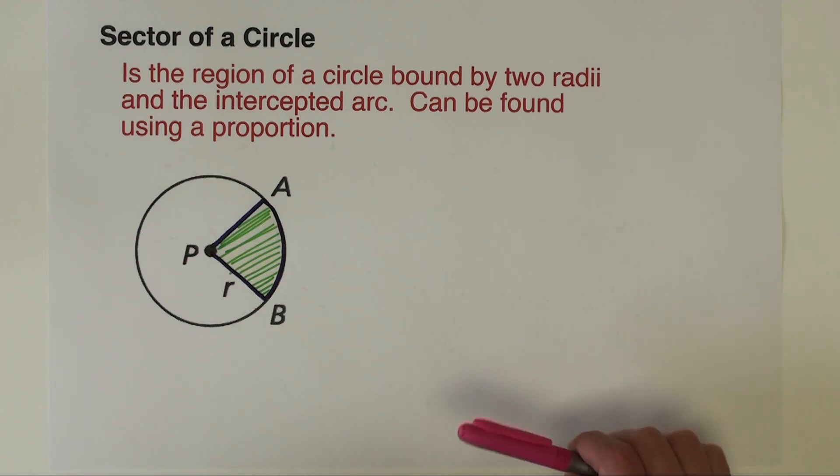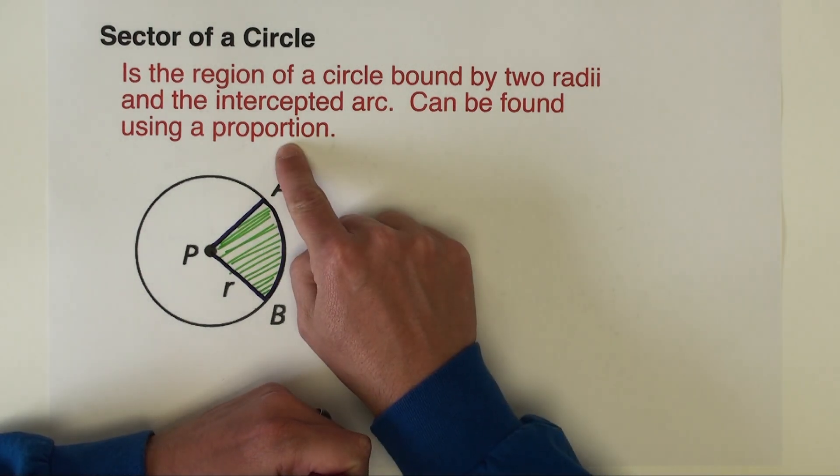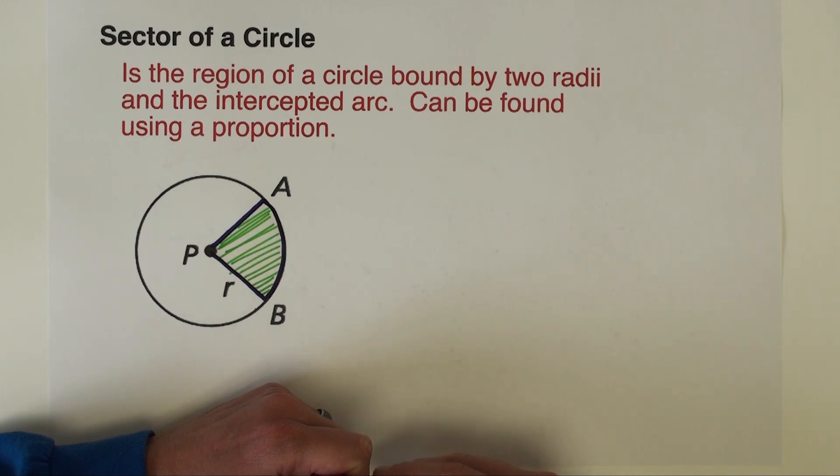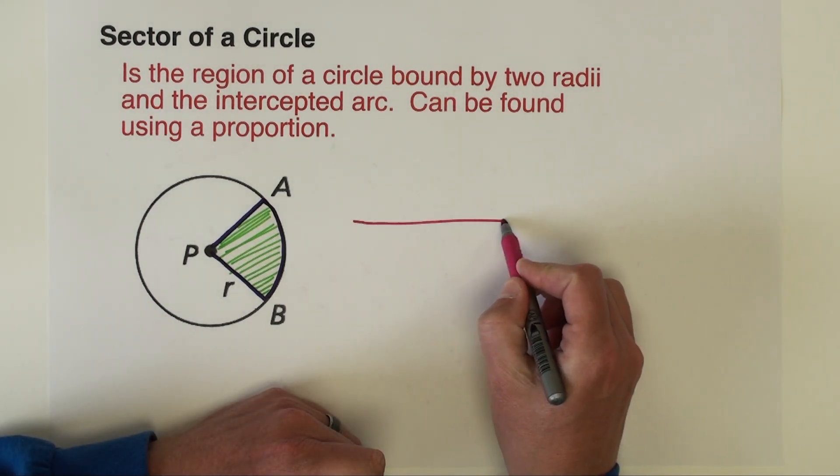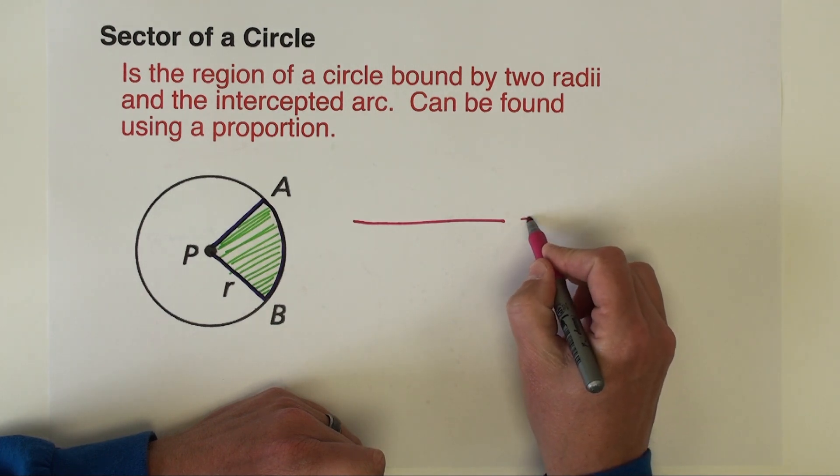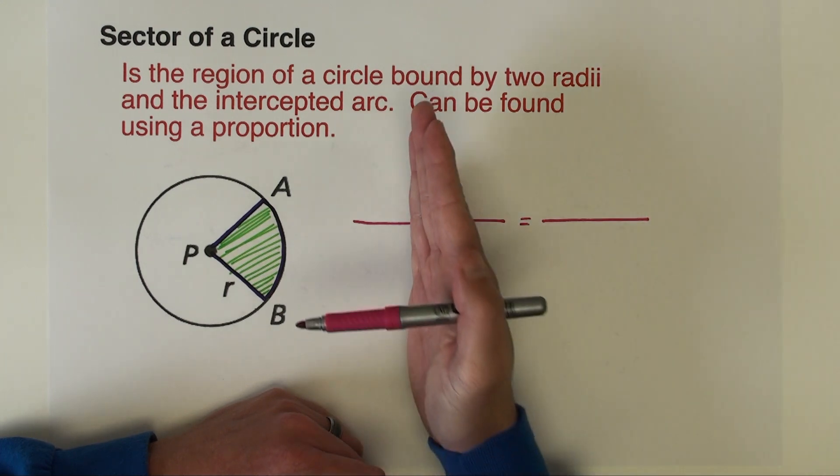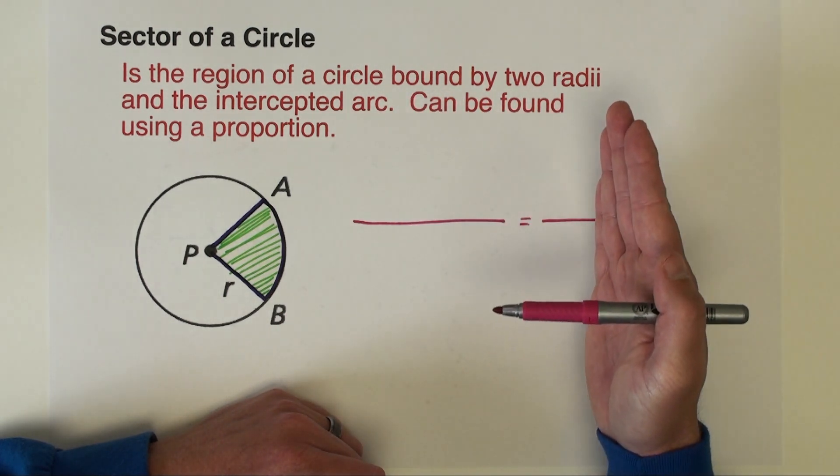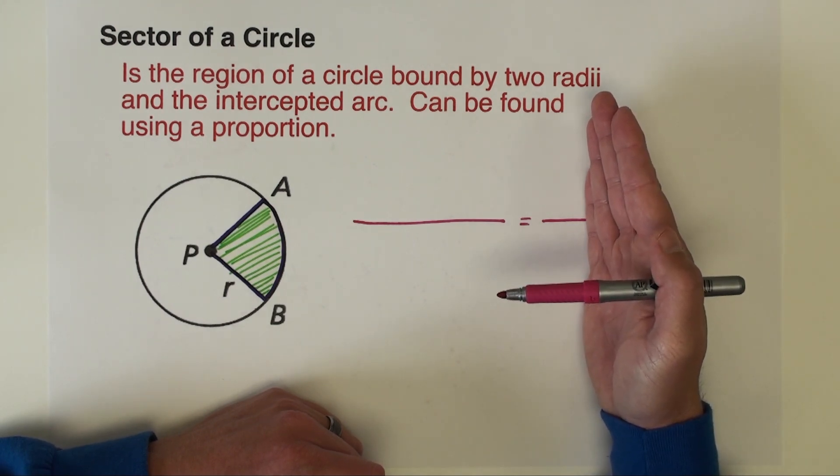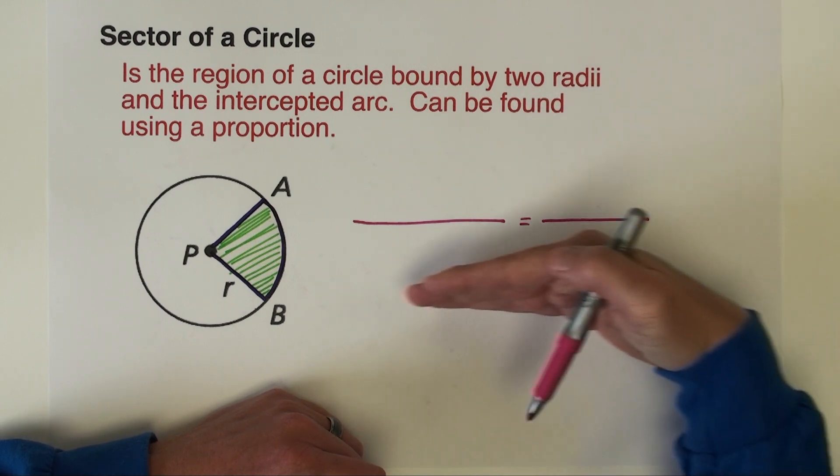And we're going to do this almost the exact same way that we did length of arcs, and that is we're going to use a proportion. And I'm going to set it up like the last time where I'm going to put two ratios equal to each other. Okay, so get a couple ratios set up. I'm going to do one ratio for areas, I'm going to do the other ratio for measurements in degrees.